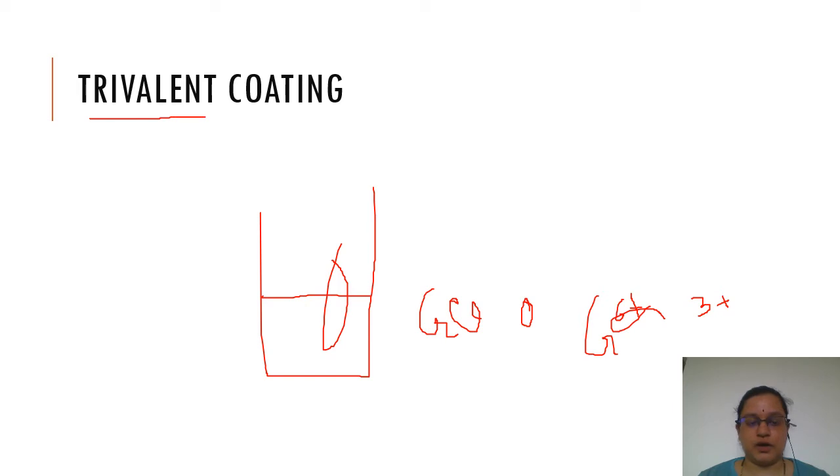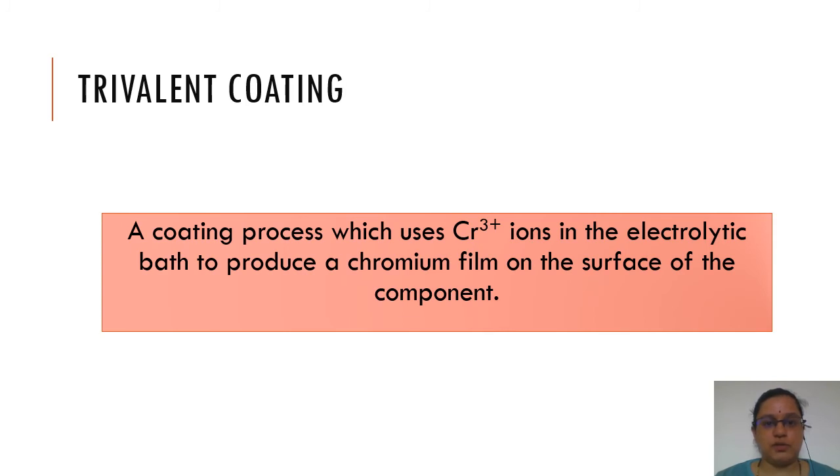Trivalent refers to the valency of the chromium ion in the electrolytic bath. To summarize, trivalent coating is a coating process which uses chromium 3+ ions in the electrolytic bath to produce a chromium film on the surface of the component. This chromium film forms the chromium oxide film and passivates the surface.